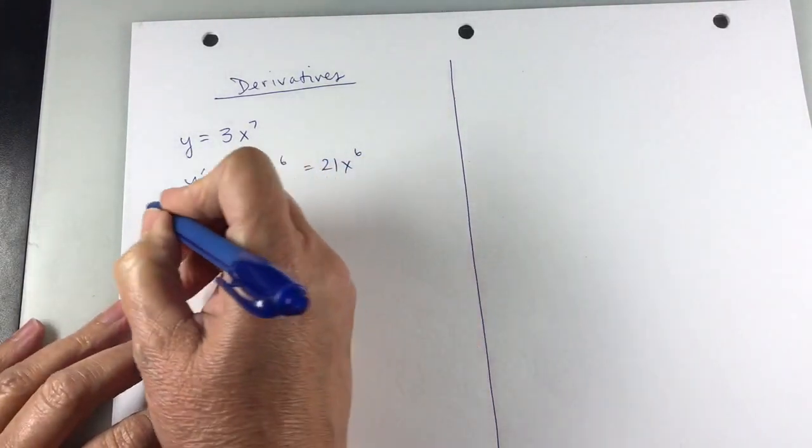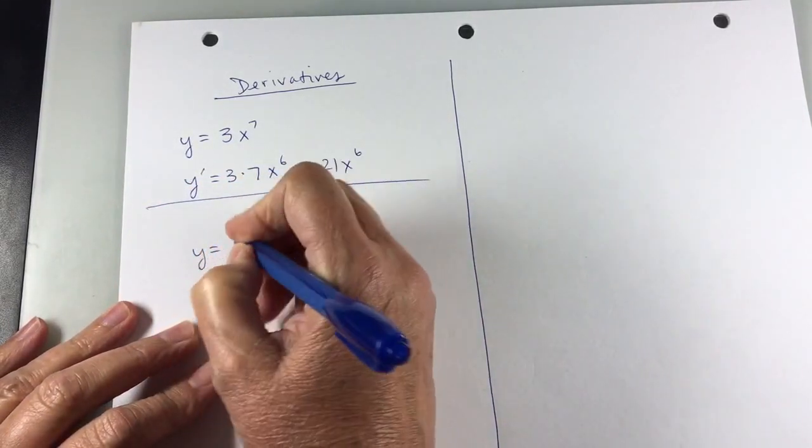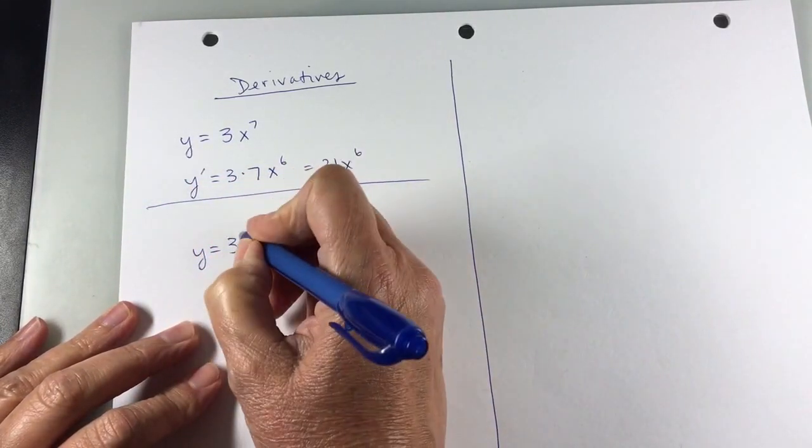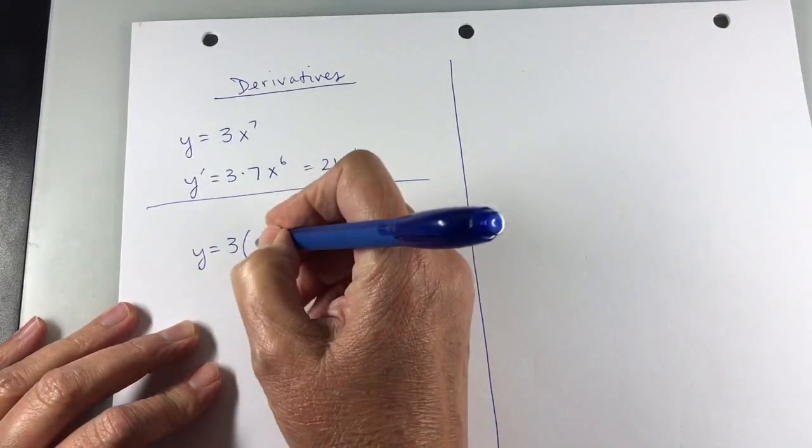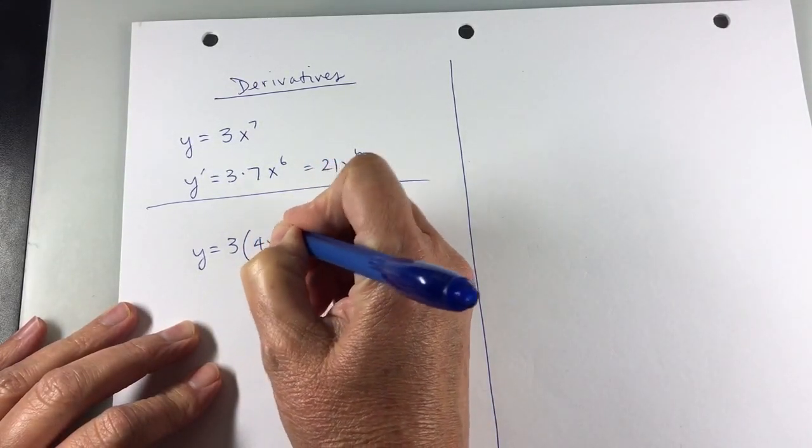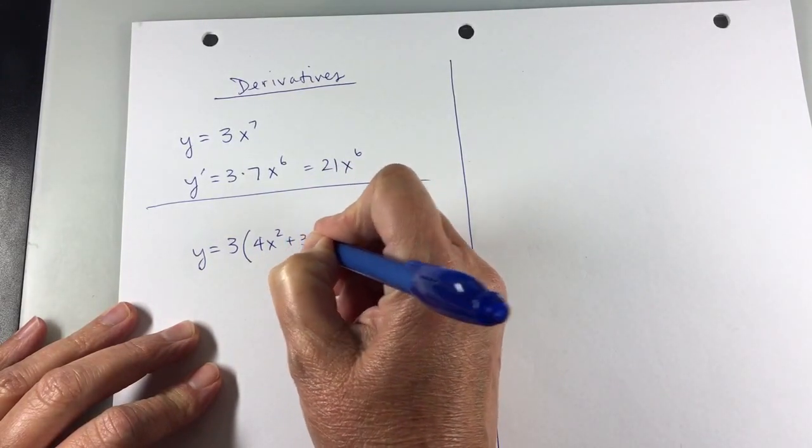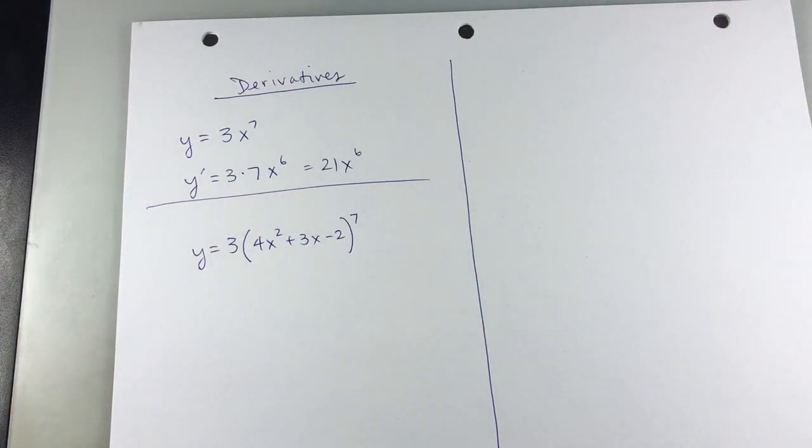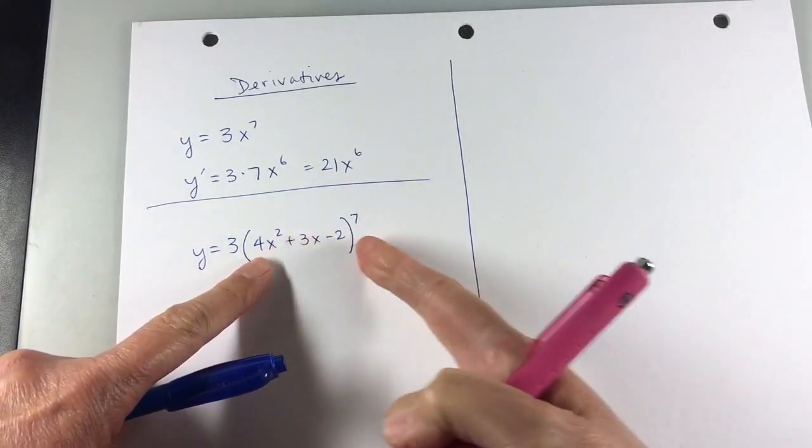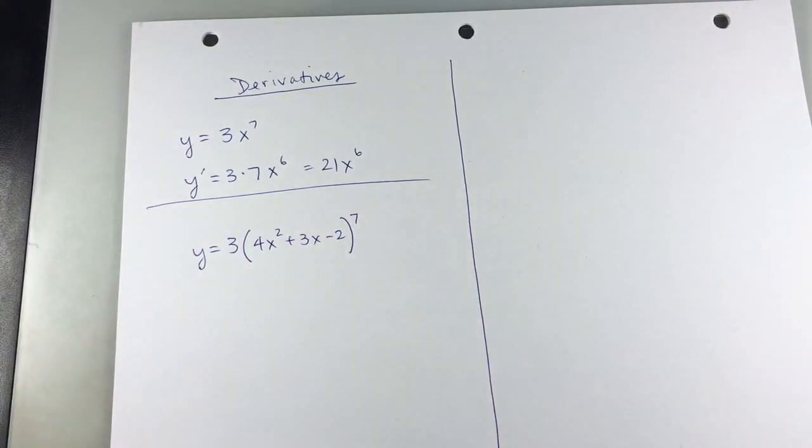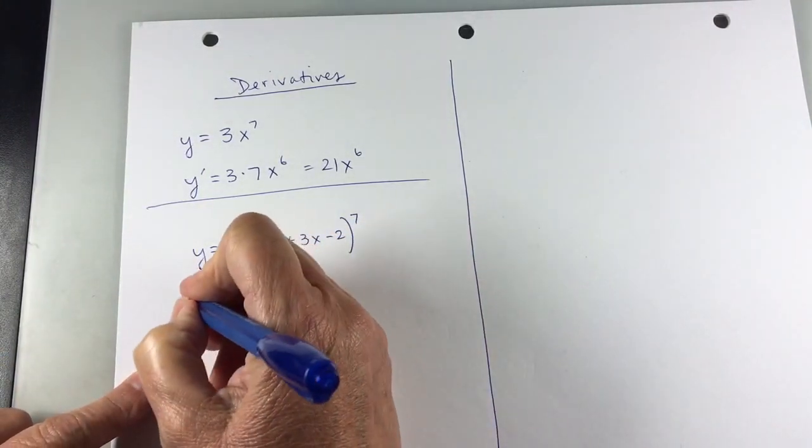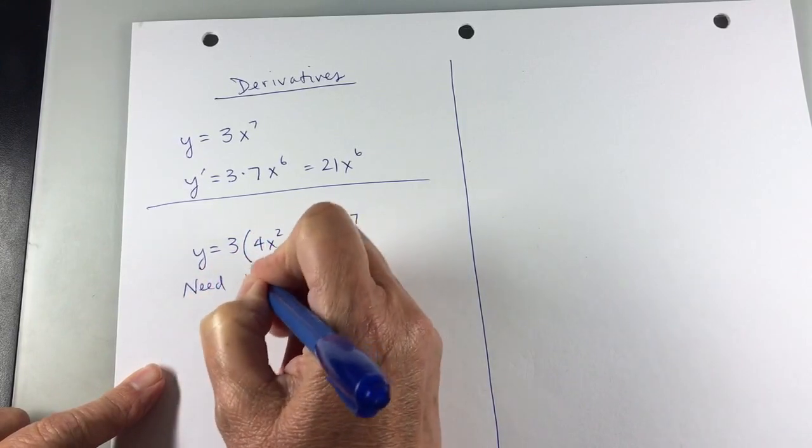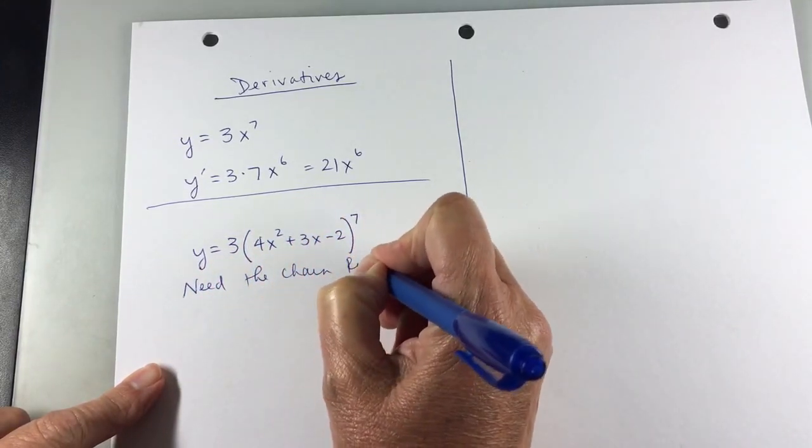And then if I do something like this, instead of just x to the 7th, I'm going to make it something like 4x squared plus 3x minus 2, all that raised to the 7th. So I'm looking at it, and I know what to do if it's just x to the 7th, but this being this whole expression to the 7th, well, I need the chain rule.